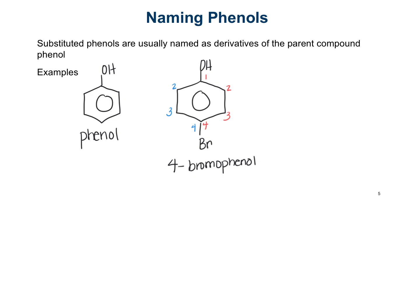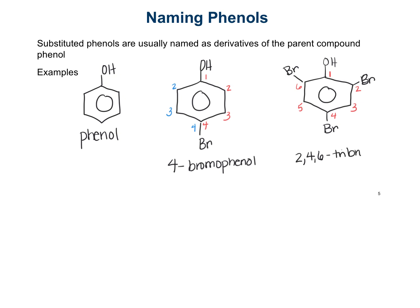If we have more substituents - for example, a bromine here, a bromine here, and a bromine here - we still understand the OH is in the one position. Numbering: one, two, three, four, five, six. We would name this as 2,4,6-tribromo because there are three of them. So the name is 2,4,6-tribromophenol.